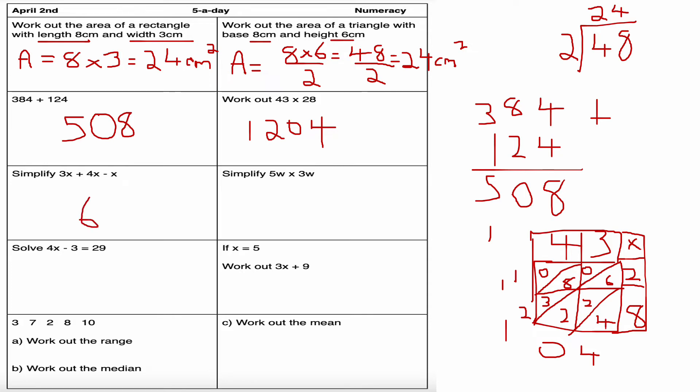Next question: simplify 3x plus 4x minus x. Well, 3x plus 4x is 7x. 7x take away 1x is 6x. Treat it like pounds or pennies. 3x plus 4x is 7x, take away 1x, I get 6x. Treat it like that when you're collecting like terms—collect all my x's together.